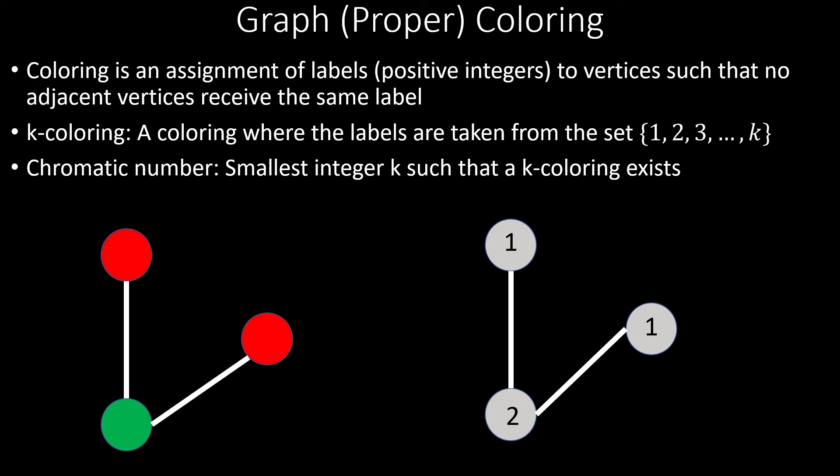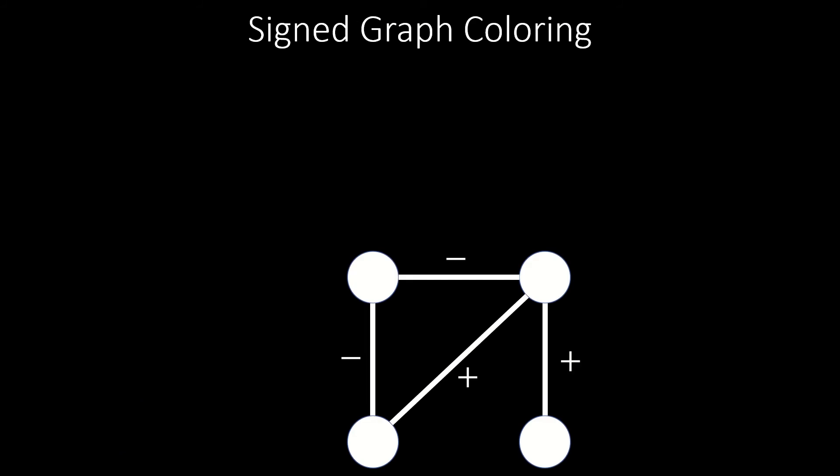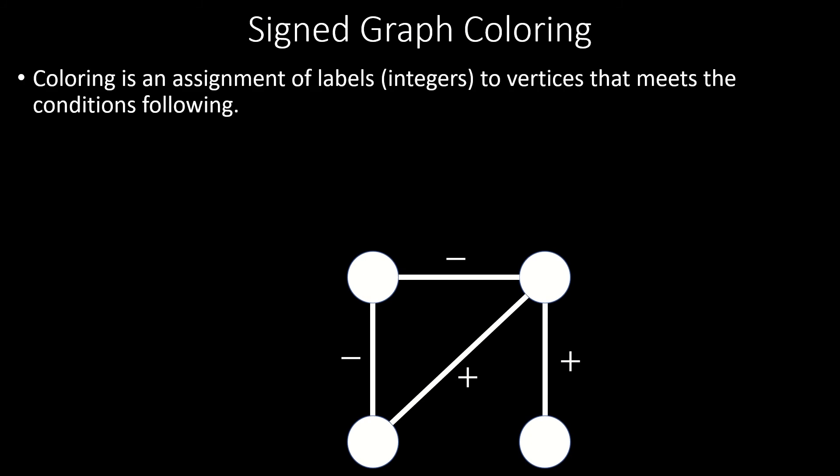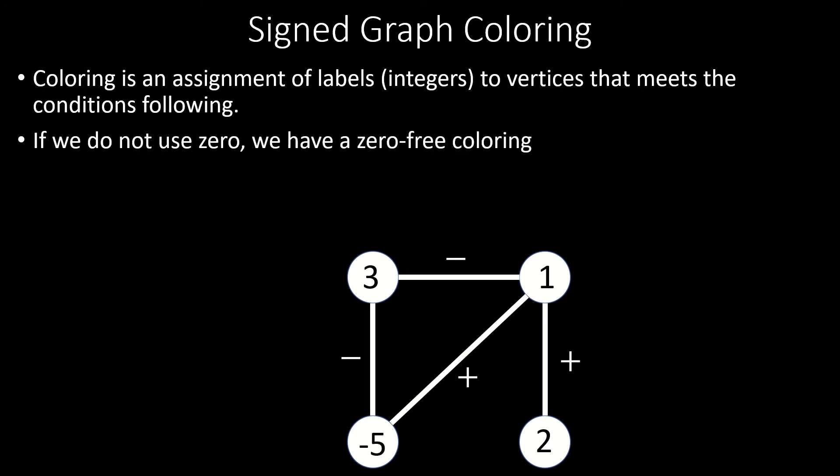Now let's look at sign graphs. In a coloring of a sign graph, the rules are a little different. For one, the labels are taken from the integers — that means including all the negative integers and zero. If we label without using zero, we have what is known as a zero-free coloring. And since we can label with negative or positive integers here, we can say that we use signed colors to color a signed graph.